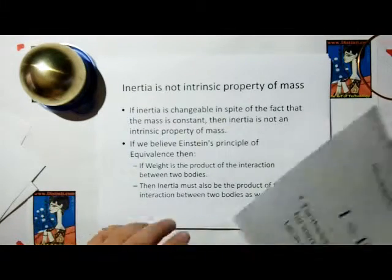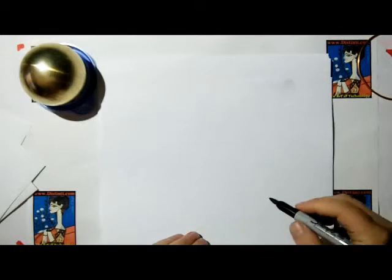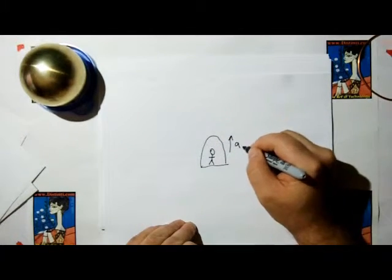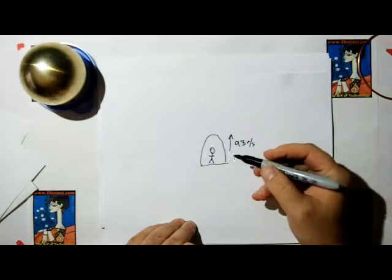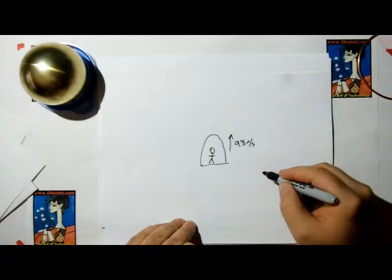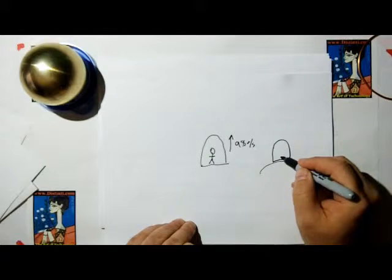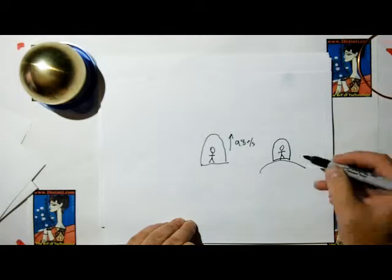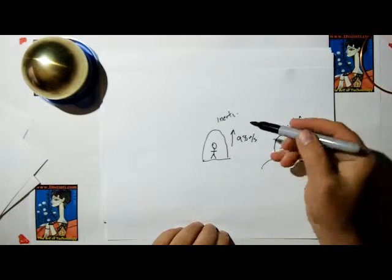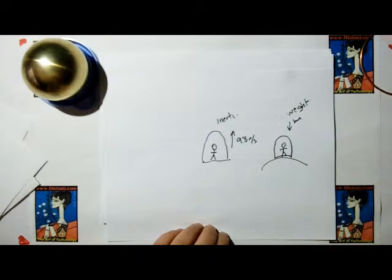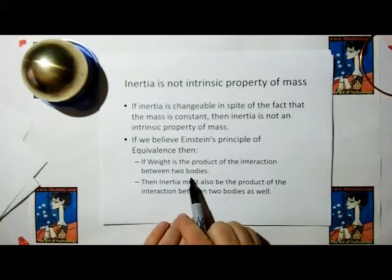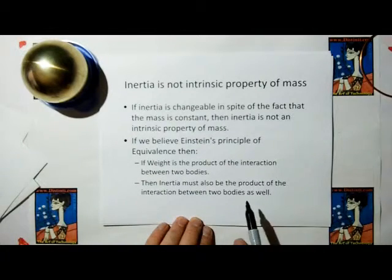If we believe Einstein's principle of equivalence — Einstein said that if you're on a spaceship accelerating at 9.8 meters per second squared, which is the acceleration of gravity, you cannot tell the difference if you're accelerating or if you're standing on the Earth. You cannot tell the difference whether you're sitting on the Earth or accelerating through space at 9.8 meters per second. This is a case of weight, and this is a case of inertia. Therefore, Einstein said, inertia and weight are essentially equivalent. So if weight is the product of the interaction between two bodies, then inertia must also be the product of the interaction between two bodies.